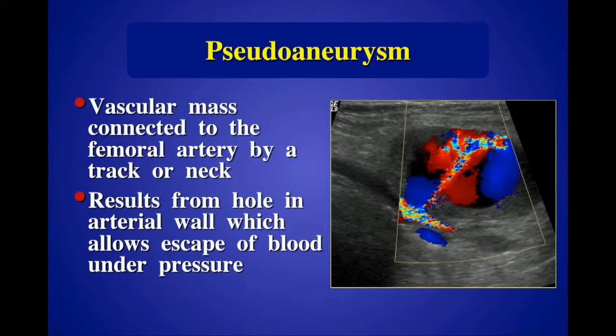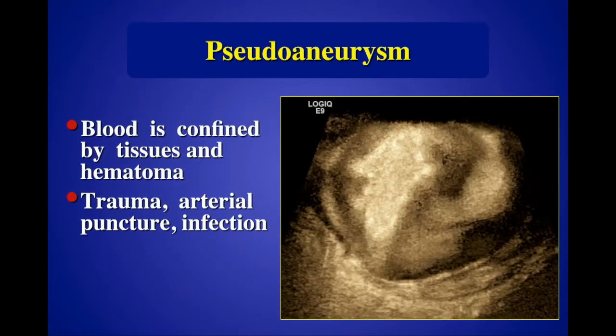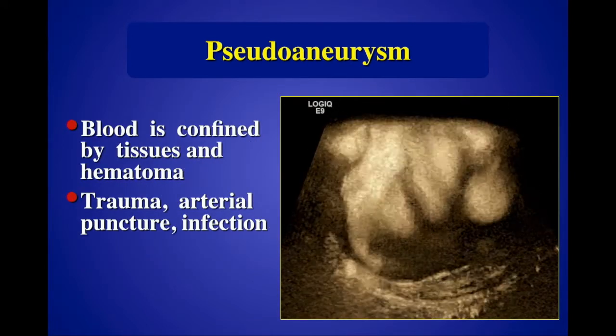Most of you have seen pseudoaneurysms — you recognize these as vascular masses connected to the underlying artery, usually the femoral artery after a femoral puncture, by a tract or a neck. This results from a hole in the wall from the procedure, which allows the escape of blood under pressure, which is then confined by the surrounding soft tissues and hematoma.